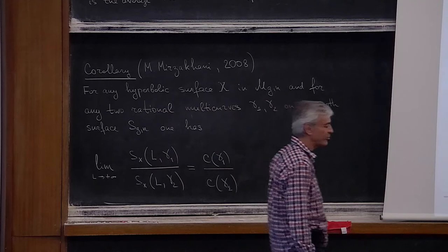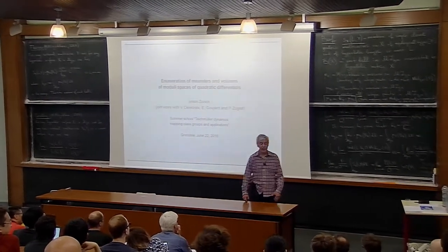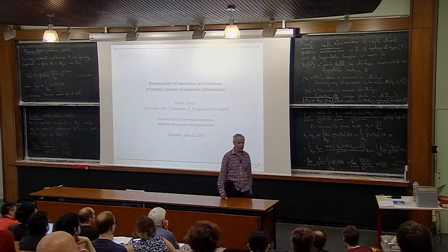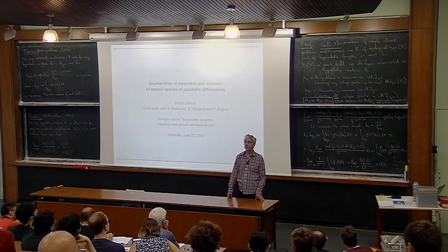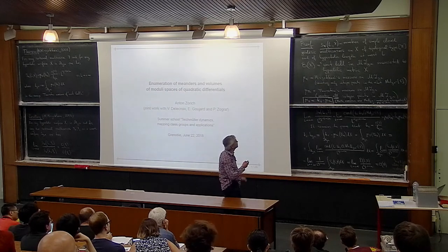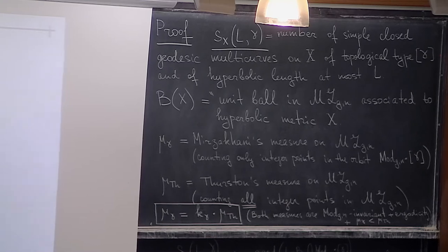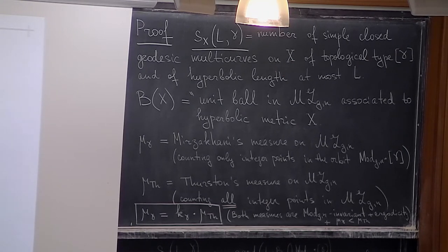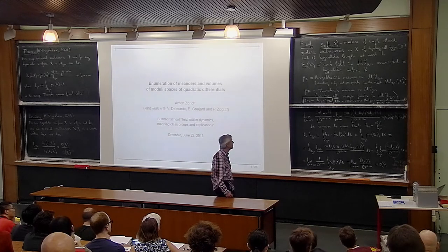Yesterday after the talk, I was asked whether I proved the theorem. Yes, I did. I would like to remind what the proof was. A considerable part of the proof was just interpretation of our counting problem in terms of Thurston's and Mirzahani's measures on the space of measured laminations. Recall that our counting function S_X(L, gamma) is the number of simple closed geodesic multi-curves of fixed topological type gamma on hyperbolic surface X of length at most L. B(X) is the unit ball in the space of measured laminations associated to the given hyperbolic metric.